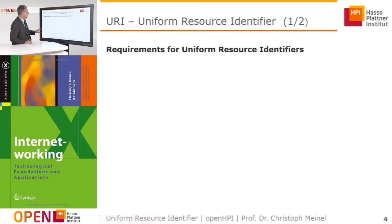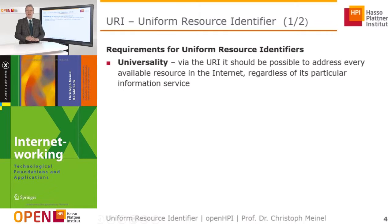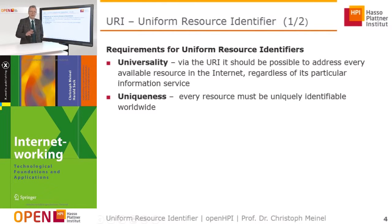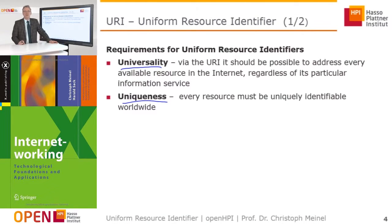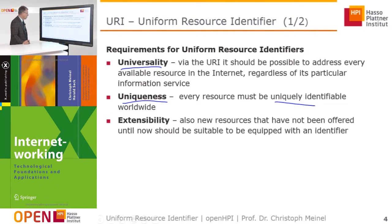What are the requirements for such uniform resource identifiers? The first requirement is universality — via such an identification scheme in the web, it should be possible to address every available resource in the Internet, regardless of the particular information service used for that resource. Another requirement is uniqueness — every resource that can be accessed over the web must be uniquely identifiable, because otherwise the system does not know which of the different resources with the same name should be sent to the browser.